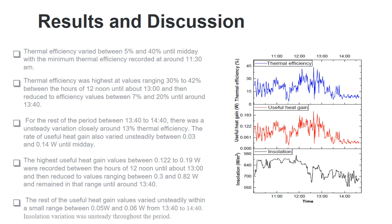Thermal efficiency varied between 5% to 40% until midday with a minimum thermal efficiency recorded at 11:30 a.m. Thermal efficiency was higher within the values of 30% to 42% around 12 noon to about 1 p.m.